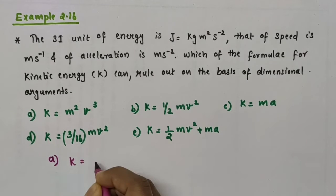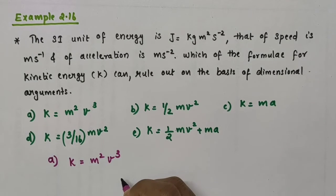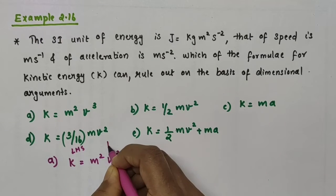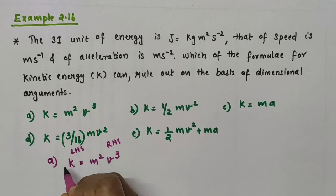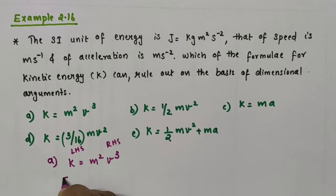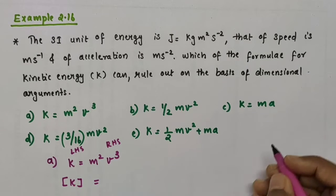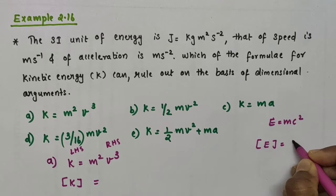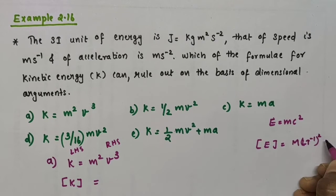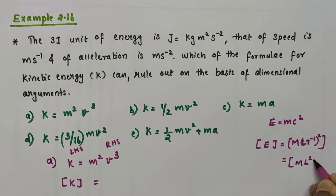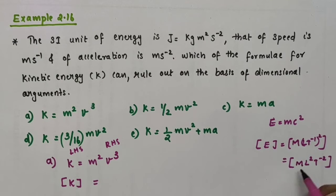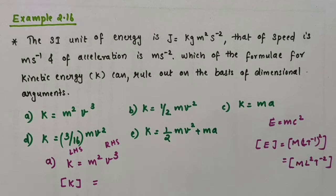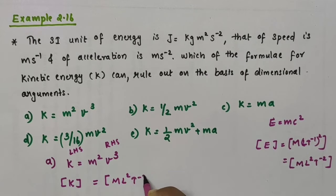The first equation is K equal to M squared V cubed. On the LHS we have kinetic energy K. Using E = MC², the dimensions of energy are: dimensions of mass times square of dimensions of velocity, which gives ML²T⁻². This is the dimension of energy — kinetic energy, potential energy, and all other forms of energy share the same dimensions ML²T⁻².